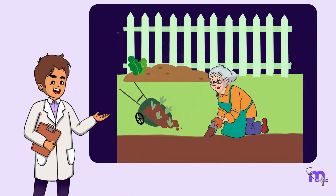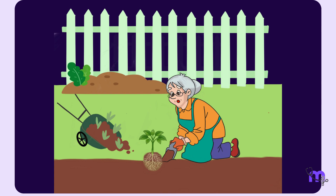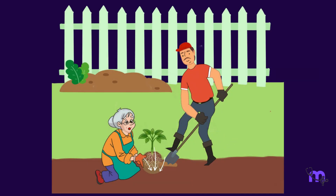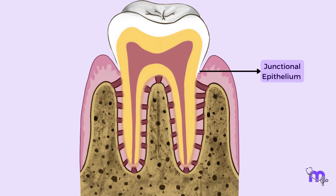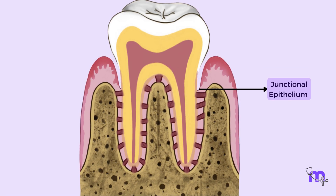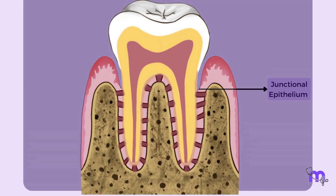To explain how the pocket forms, let me use a story of an elderly lady having difficulty potting a plant. As she placed the plant into the soil, she noticed the roots were not properly nestled. She asked her gardener to dig the soil deeper to accommodate the roots. This can be compared to the first mechanism of pocket formation, where the junctional epithelium migrates apically, creating sulcus depth. As there is a loss of attachment, it is called a true pocket.